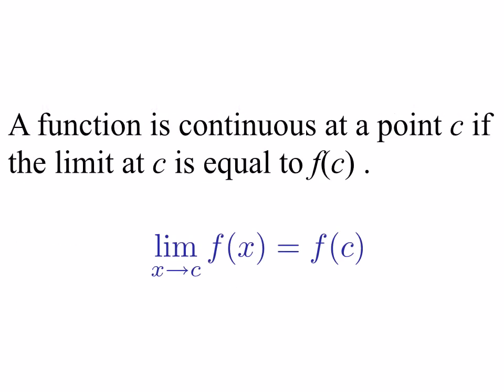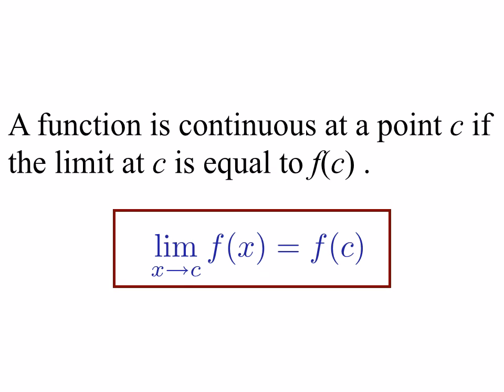To summarize: a function is continuous at a point c if the limit at c is equal to f of c. Mathematically, we write that as the limit as x approaches c of f of x is equal to f of c.